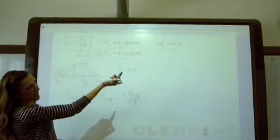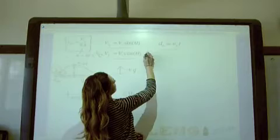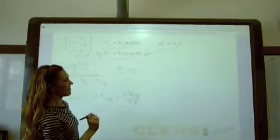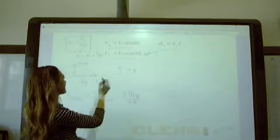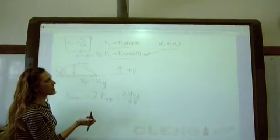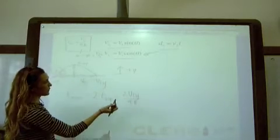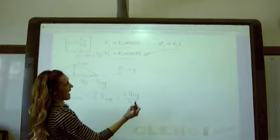We already knew Vx, because Vx is just given right here, which is Vi cosine theta. So what we needed to get that dx, which is what we're looking for, how far the projectile went in the x direction. What we needed was the time that it took to get all the way across there. And now we have that.